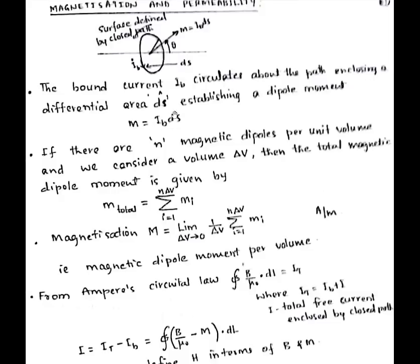The bound current ib circulates about the path enclosing the differential area dS, establishing a dipole moment m = ib·dS. If there are n magnetic dipoles per unit volume and we consider volume delta-v, the total magnetic dipole moment is m_total = summation from i=1 to n·delta-v of m_i. Magnetization M is defined as the limit of (1/delta-v) times the summation of m_i as delta-v tends to zero — that is, magnetic dipole moment per volume.